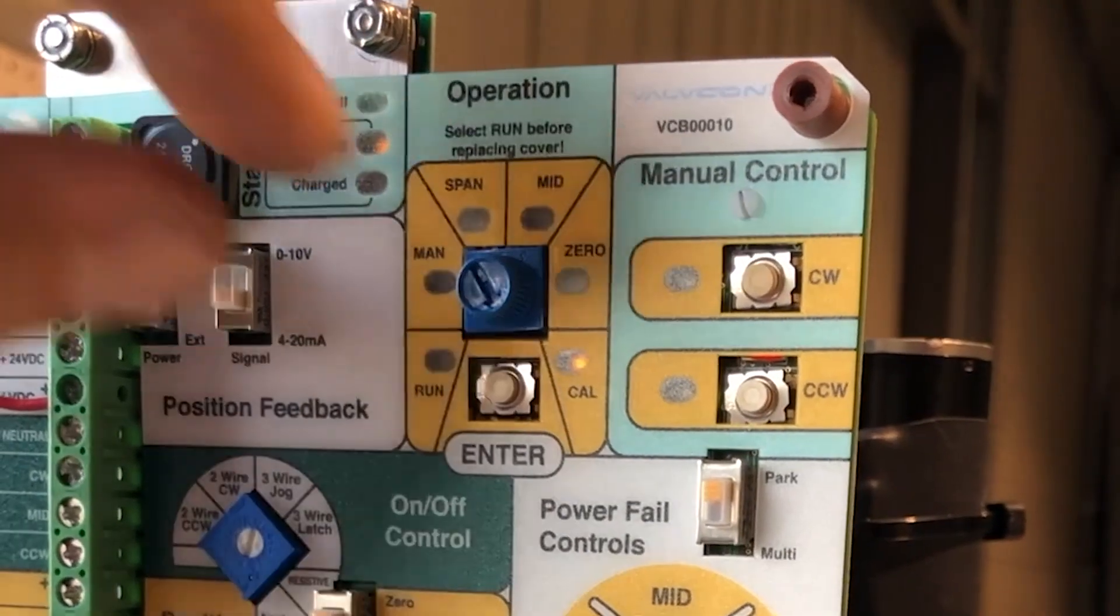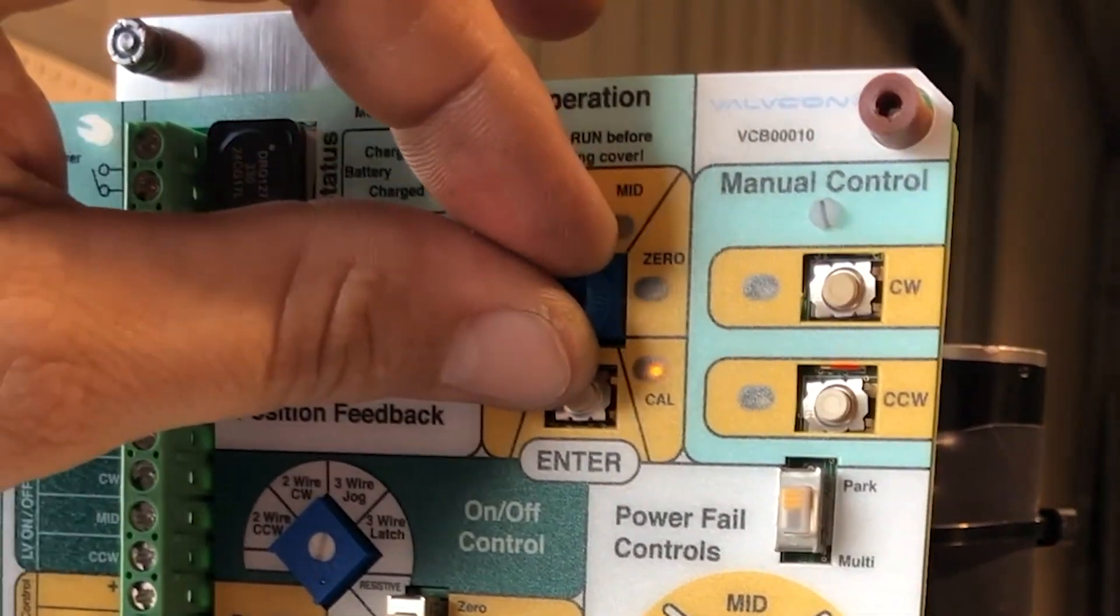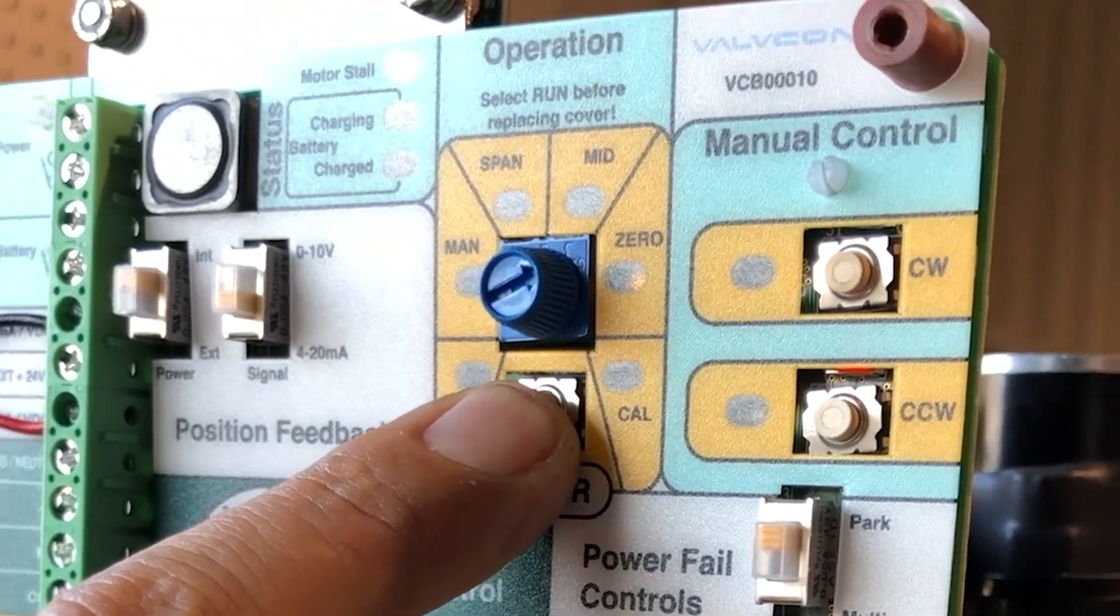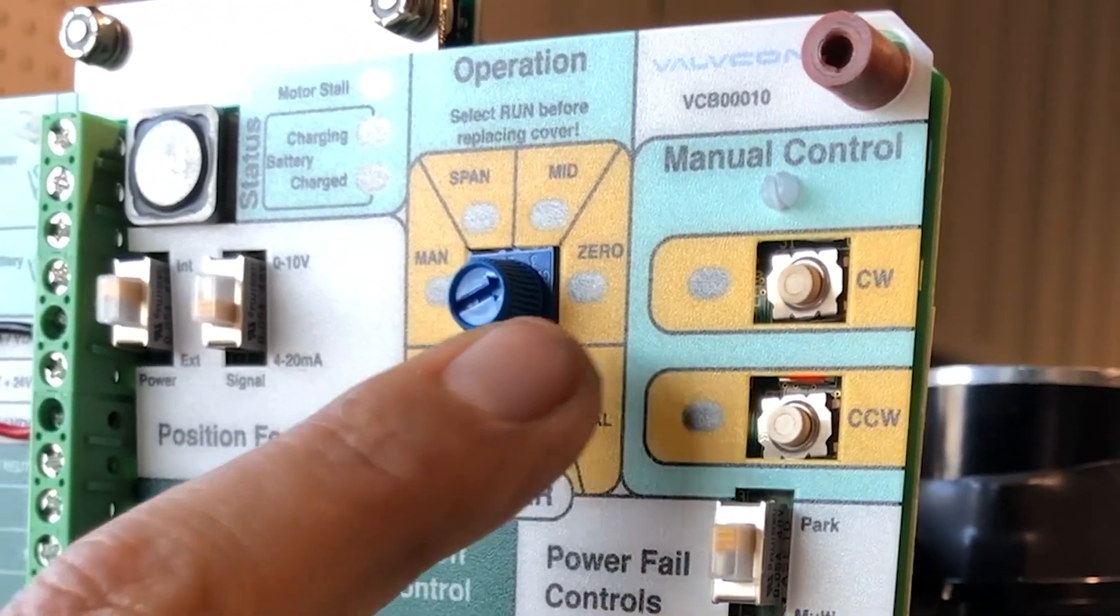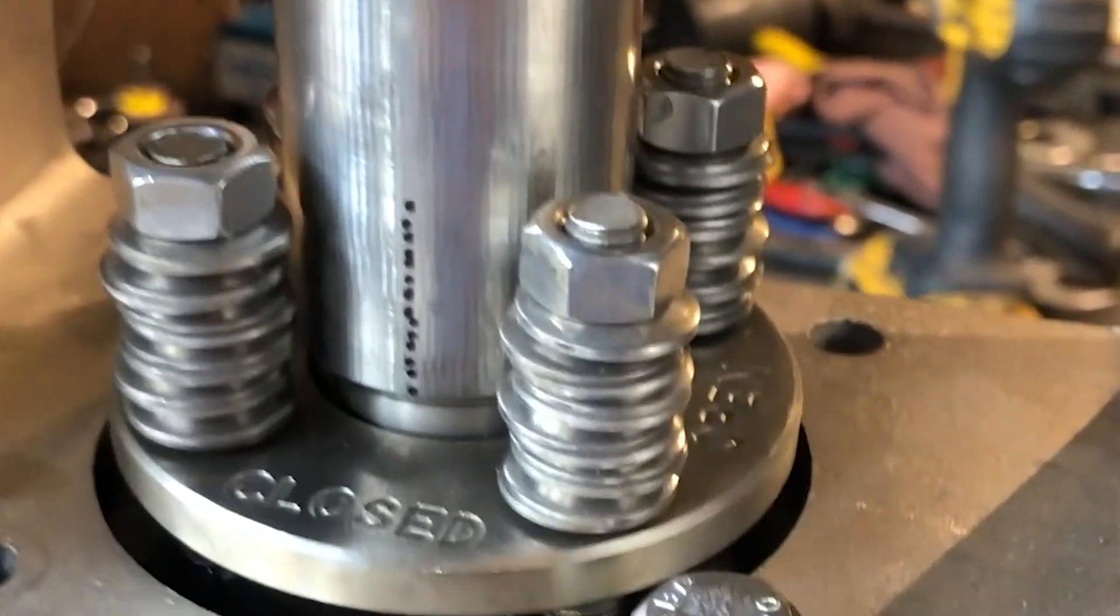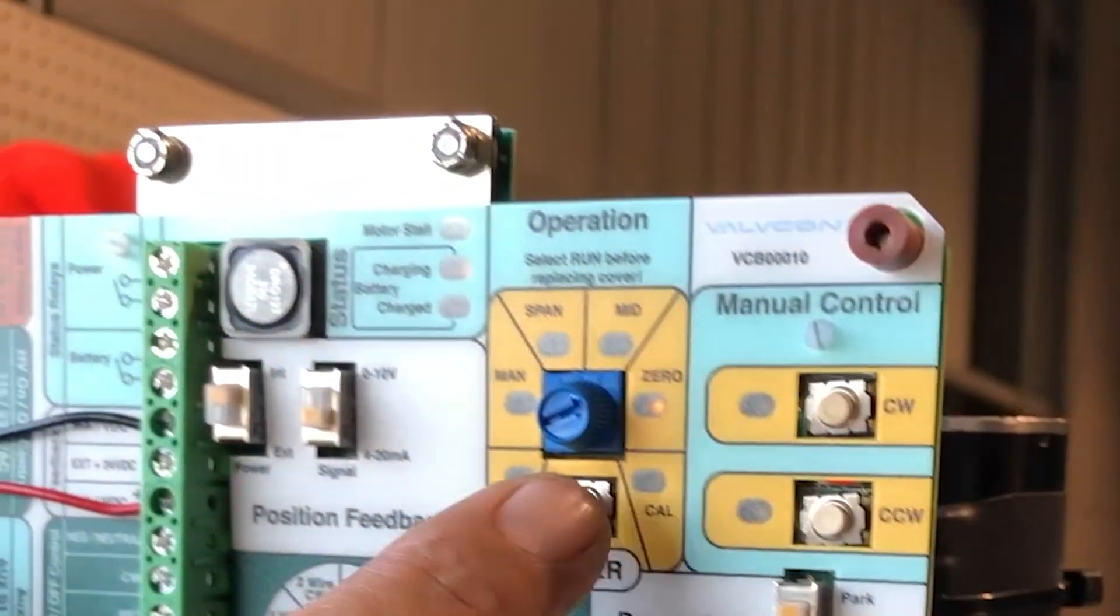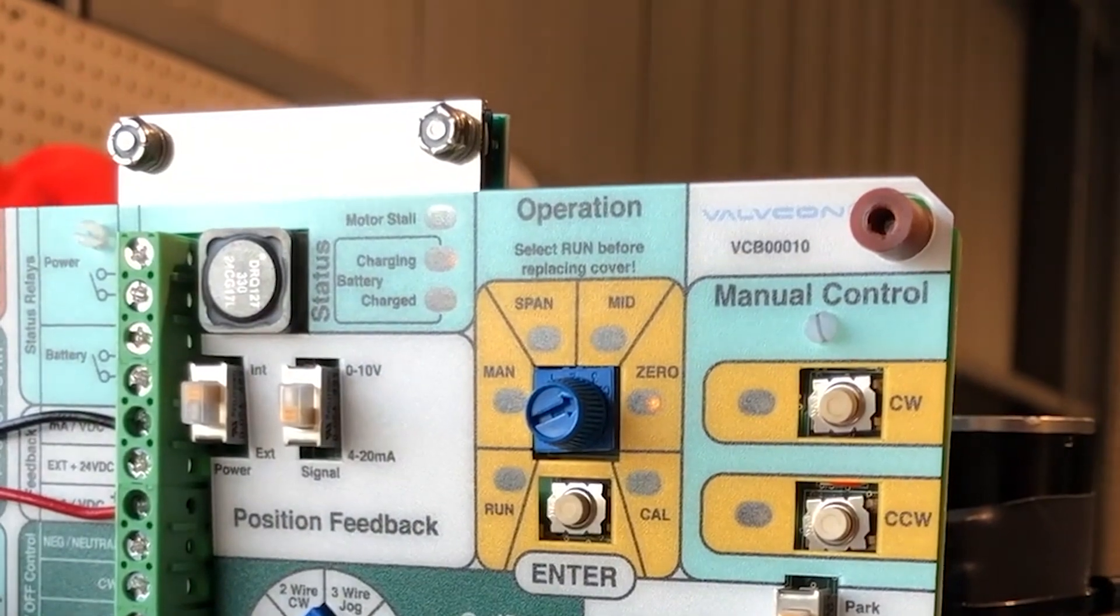Next we want to go to the zero position. Press enter for one to two seconds until we get a flashing LED. Next we want to verify that our valve is in the closed position and that our milliamp signal is at four. Press enter to take the change.